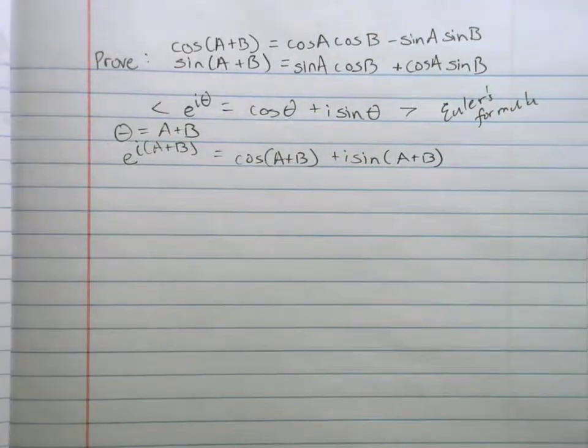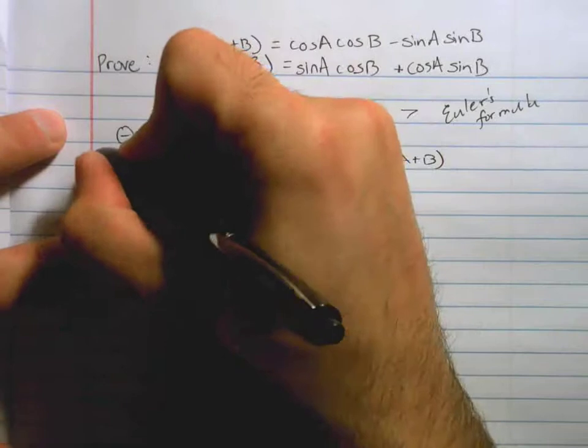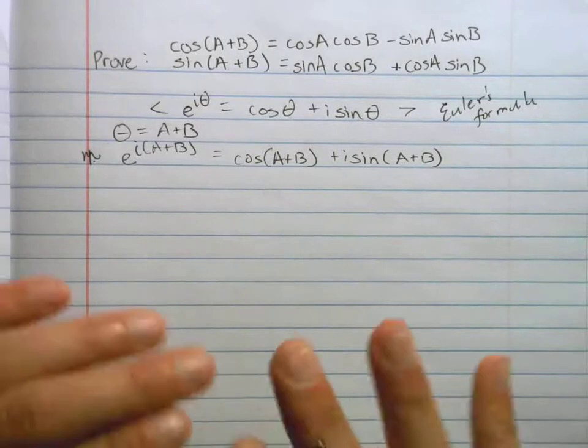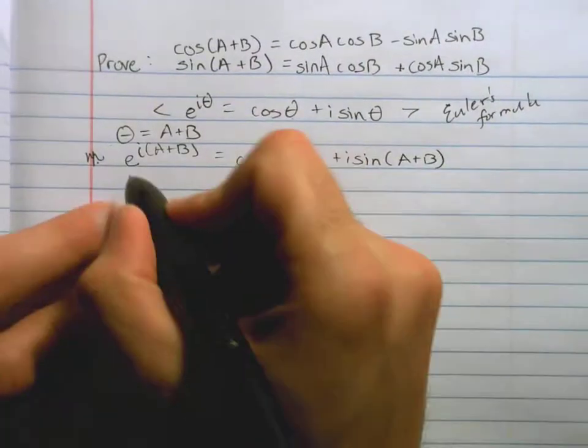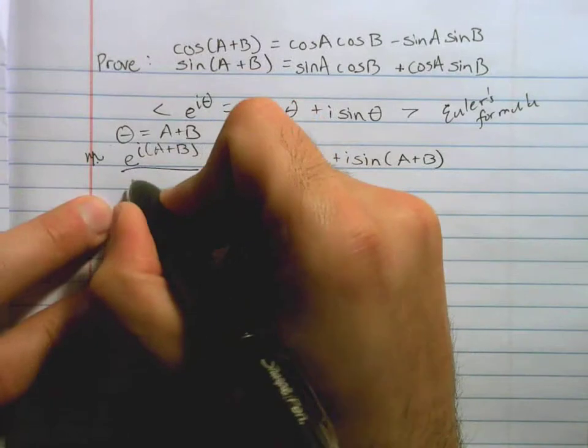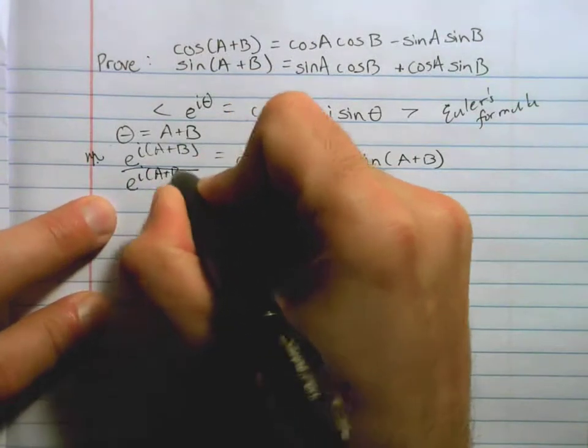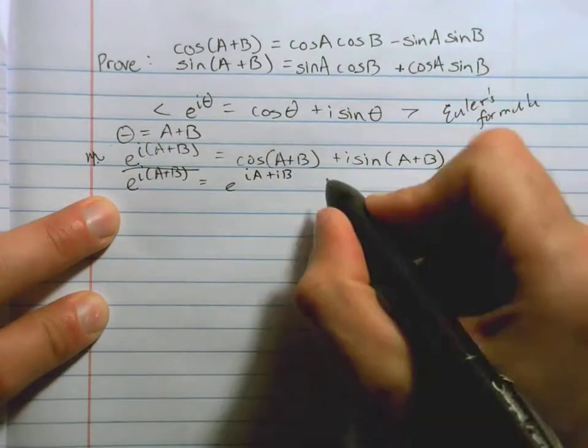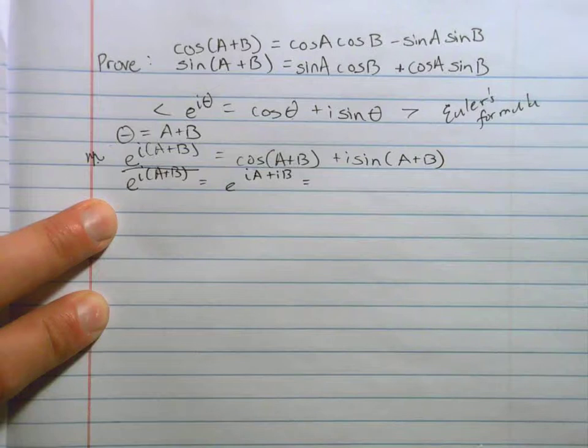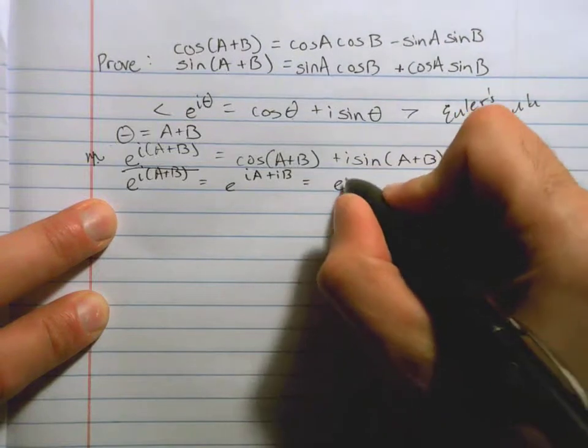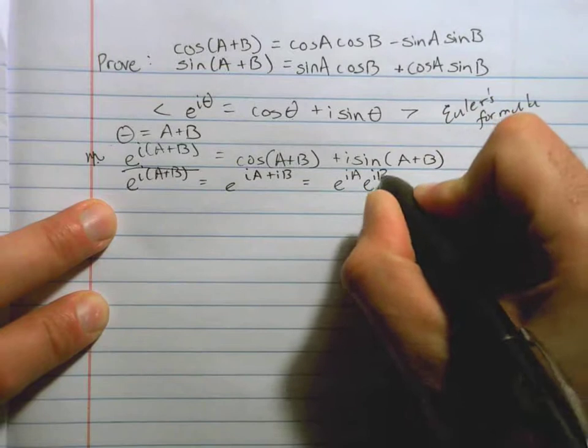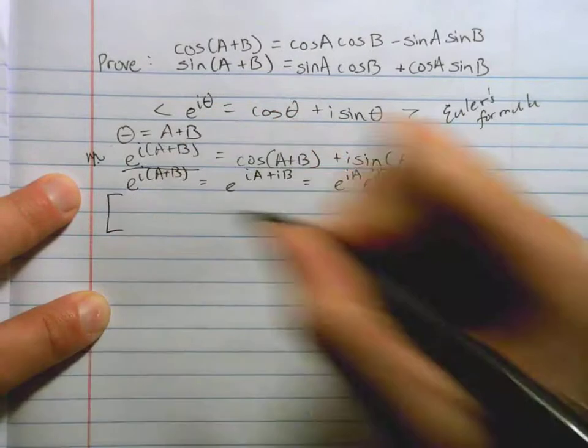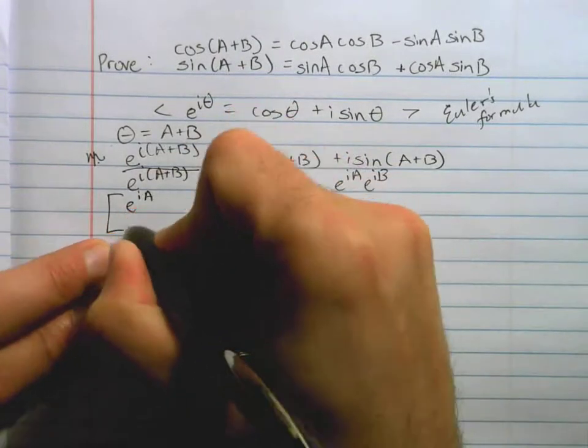All right. And we're going to just set that over to the side. Maybe we'll put a squiggly or something by it. That's something we're going to use in a little bit. Now I'm going to start with this part of it and expand it out. Look, e to the i a plus b. If we distribute that i, it's e to the i a plus i b. Exponent rules tell us that this is the same thing as e to the i a times e to the i b.